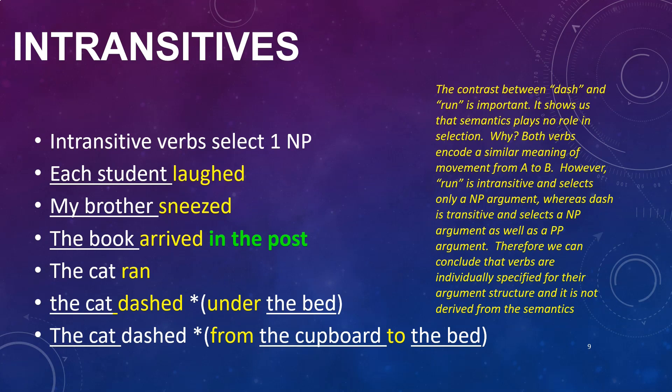Intransitive verbs select one noun phrase. For instance: 'each student laughed,' 'my brother sneezed,' 'the book arrived in the post,' 'the cat ran.' The verb 'laugh' selects a subject — 'each student laughed' — and similarly for 'sneezed,' 'arrived,' and 'ran.' We will be coming back to the contrast between 'ran' and 'dashed' a little bit later, so I'm going to skip over that point for now.